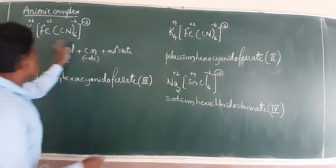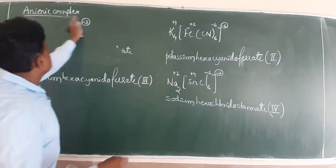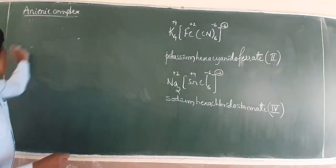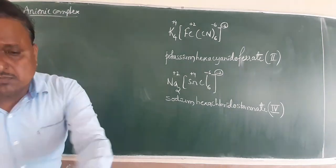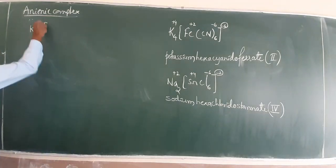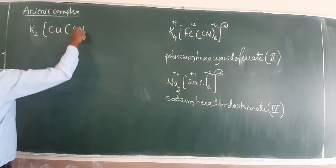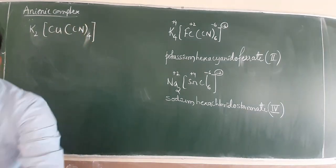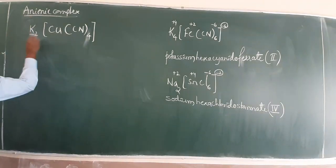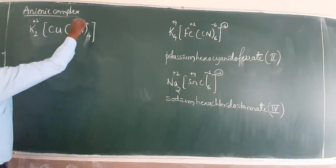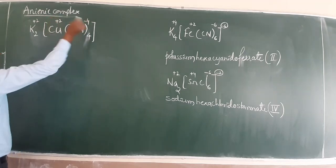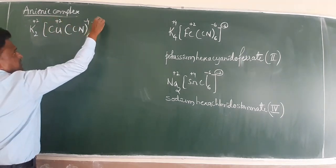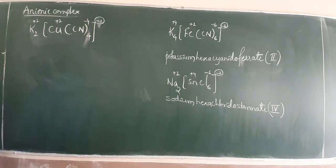One example. Keep practicing very interesting examples are mentioned in our syllabus. K2 CuCN6. Potassium is plus 2. Cyanide is minus 4. This is plus 2.